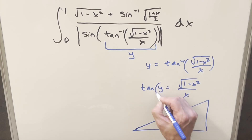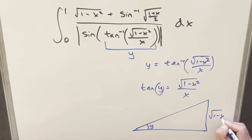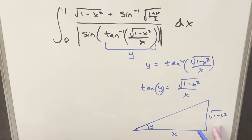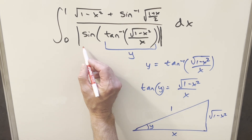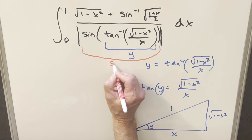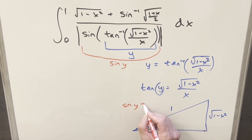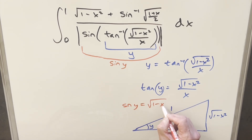Our angle is y. For tangent — opposite over adjacent — we have √(1 - x²) over x. By the Pythagorean theorem: squaring gives 1 - x² and x², which together give 1, so our hypotenuse is just 1. Looking back at the problem, everything inside the absolute value is actually sin(y). From the triangle, sin(y) = opposite over hypotenuse = √(1 - x²).